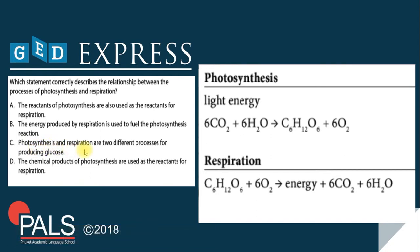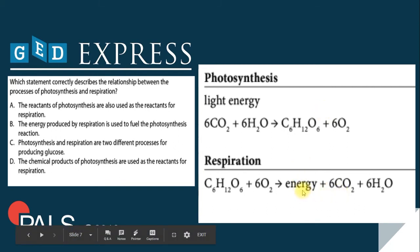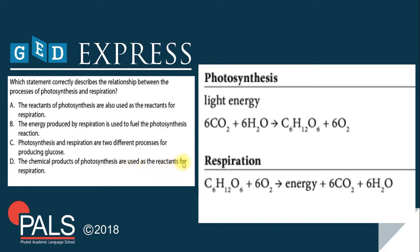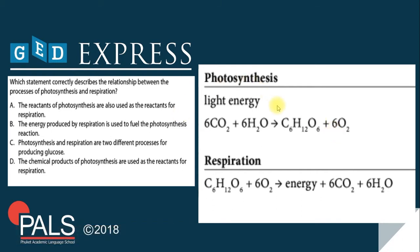Now letter C: photosynthesis and respiration are two different processes for producing glucose. Photosynthesis produces glucose, but respiration does not produce glucose — it produces energy, carbon dioxide, and water. So the only option left is D: the chemical products of photosynthesis are used as the reactants for respiration. Which is absolutely correct.